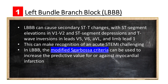Left Bundle Branch Block, LBBB, can cause secondary ST-T changes, with ST segment elevations in V1 and V2, and ST segment depressions and T-wave inversions in leads V5, V6, AVL, and limb lead 1. This can make recognition of an acute STEMI challenging. In LBBB, the modified Sgarbossa criteria can be used to increase the predictive value for or against myocardial infarction.